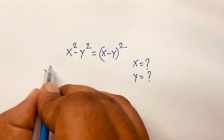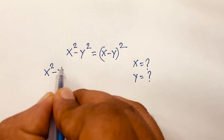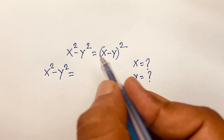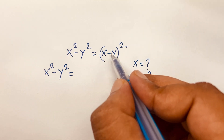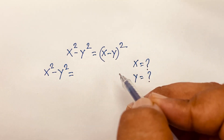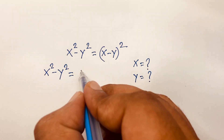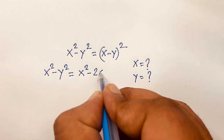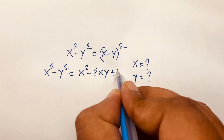We know that (a minus b) whole squared equals a squared minus 2ab plus b squared. Applying this rule, the right-hand side becomes x squared minus 2xy plus y squared.